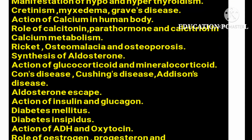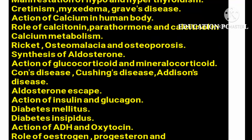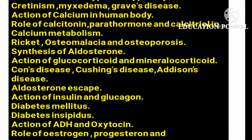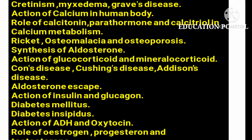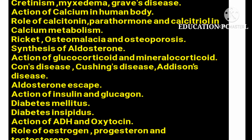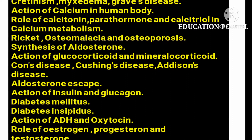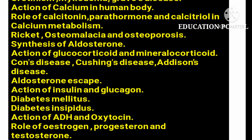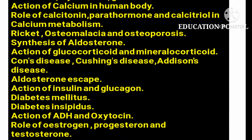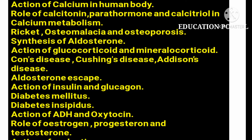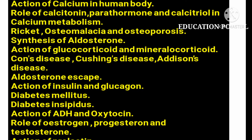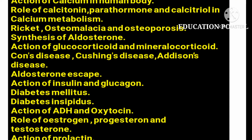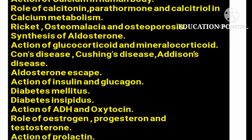The next important question is the action of calcium in the body. Always remember the hormones involved in calcium homeostasis: calcitonin and PTH (parathyroid hormone). You should also remember the roles of calcitonin, PTH, and calcitriol, as well as calcium metabolism.